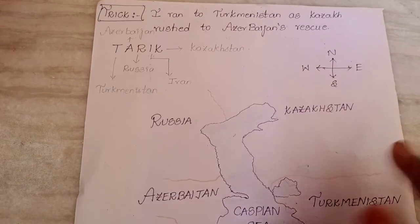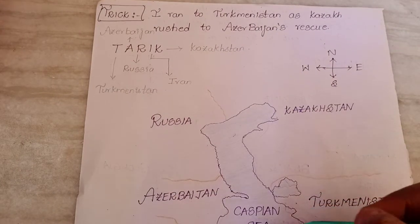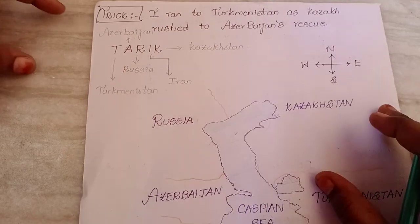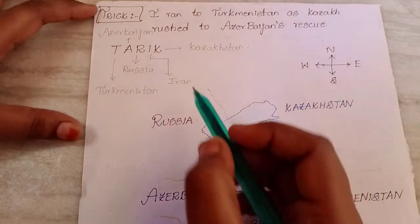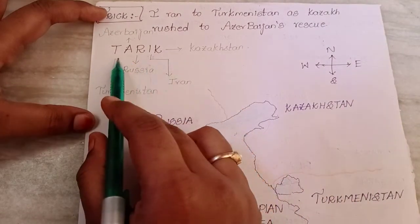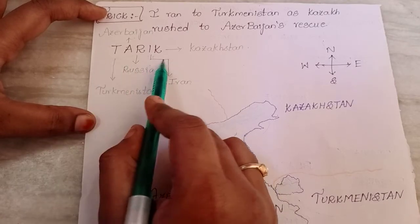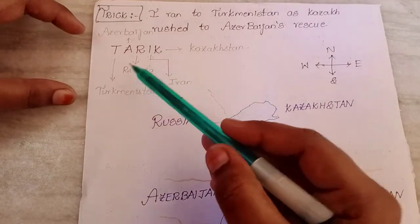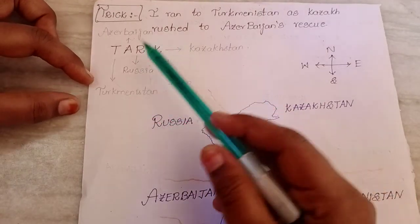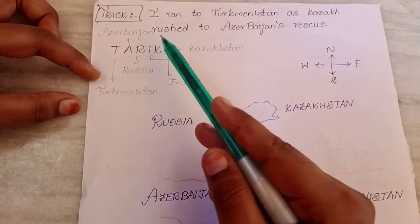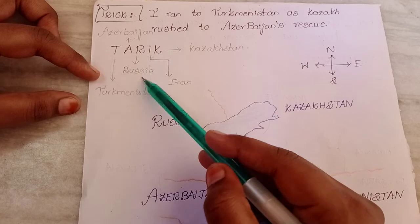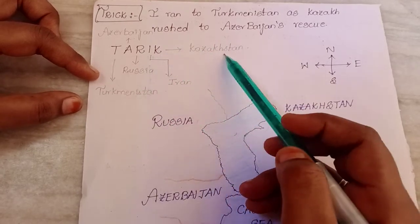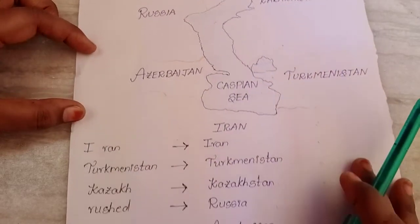If you don't want to use that sentence, you can remember the mnemonic TARIK — T-A-R-I-K. 'Tarik' means date in Telugu. T stands for Turkmenistan, A stands for Azerbaijan, R stands for Russia, I stands for Iran, K stands for Kazakhstan.